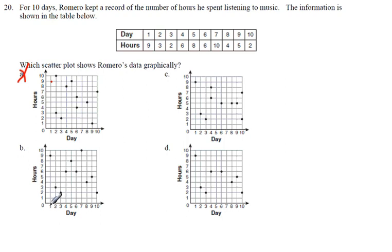Go to B, day 1, 9. This has a dot, so that's good. 2 has 3, so that's good.